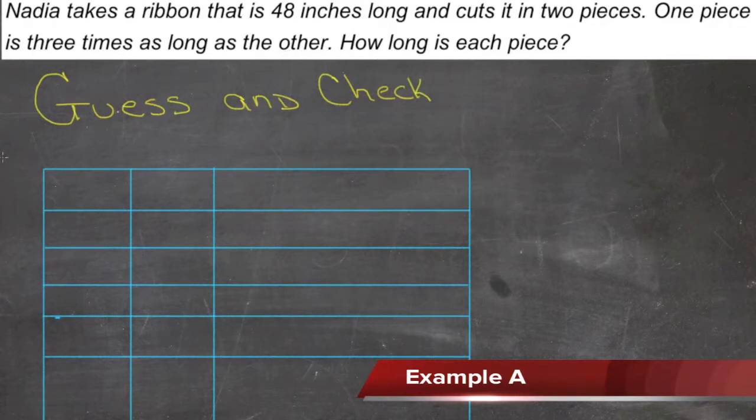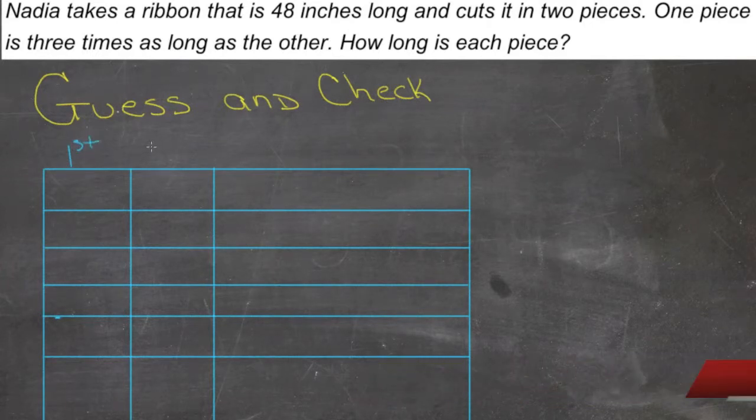I went ahead and made us a grid here to save some time. Wow, I suppose I should probably get a pen in, right? This will be the slot for the first piece. This will be the slot for the second piece, which has to be three times as long. And this will be our total.